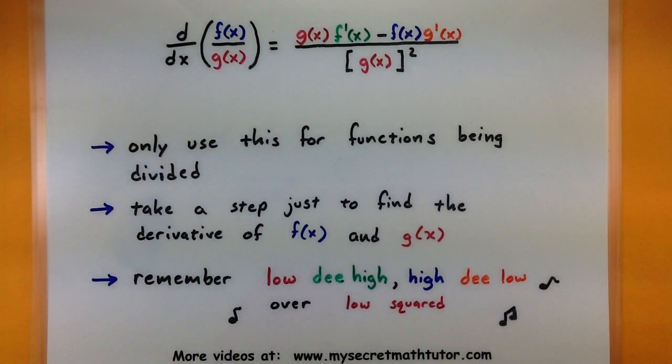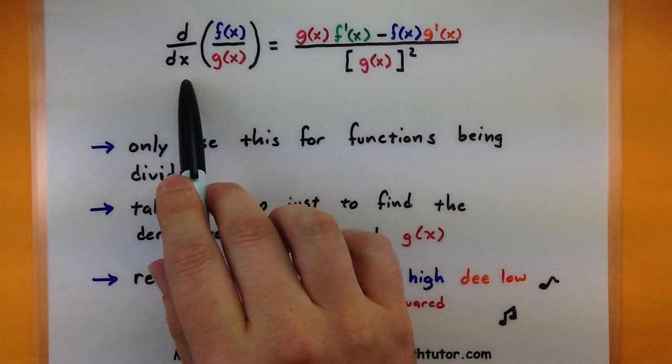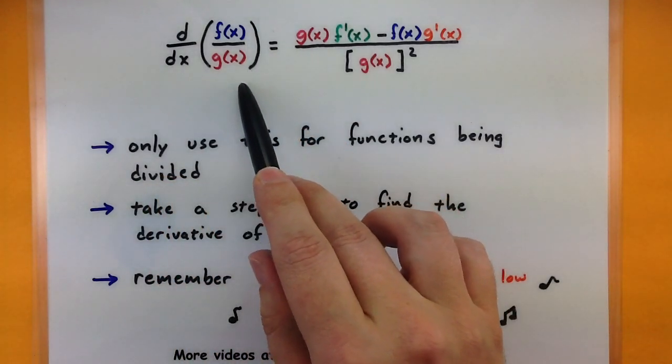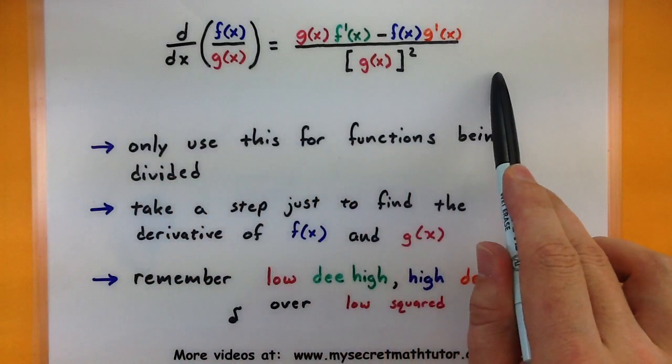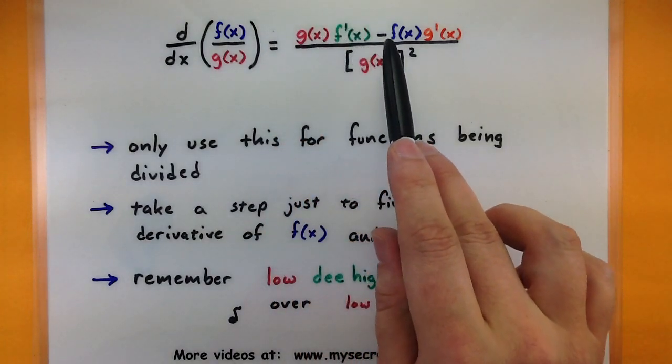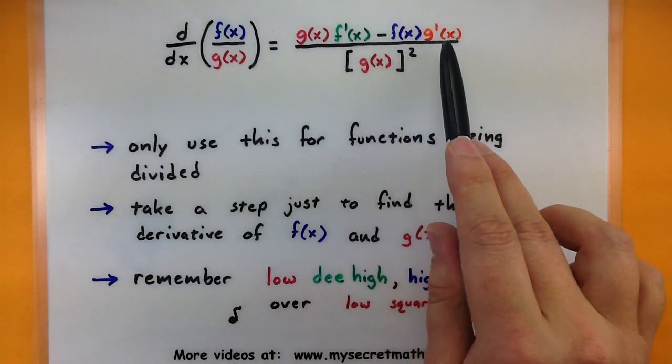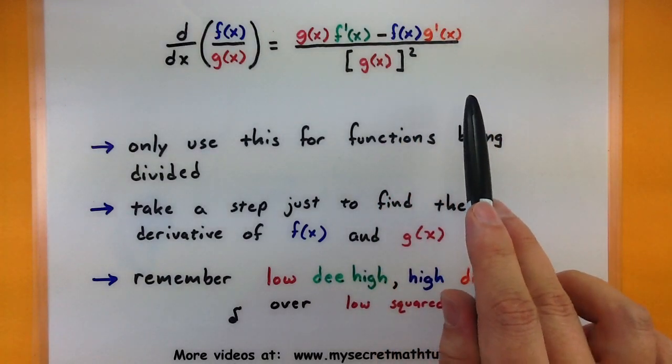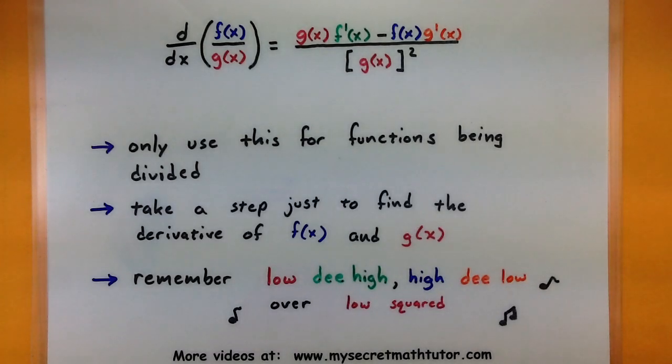Alright, so let's pick this apart and see what's going on here. When you want to take the derivative of one function divided by another function, you put it together like this. You take the bottom function multiplied by the derivative of the top function minus the top function multiplied by the derivative of the bottom function all over the bottom function squared.